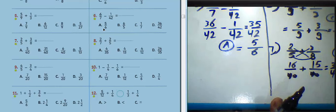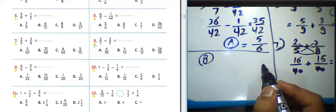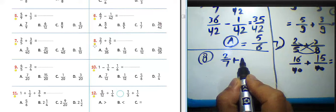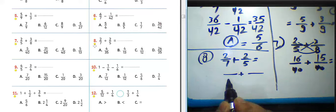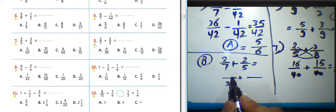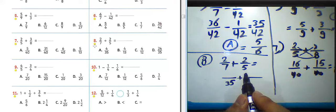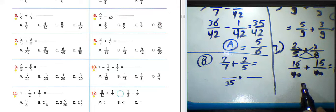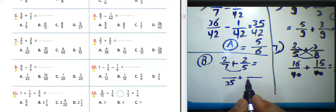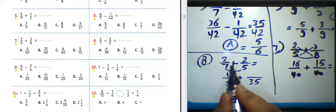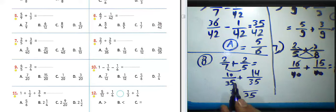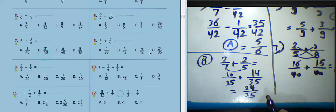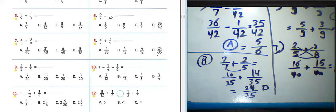Question number eight: 2 over 7 plus 2 over 5. We can find the least common multiple between them, which equals 35. Since 5 is a prime number — it has only two factors, 1 and itself — and 7 cannot be divided by 5, we find the product: 7 times 5 equals 35. Then 2 times 5 equals 10, and 2 times 7 equals 14. The result will be 35 in the denominator, and 10 plus 14 equals 24. The result is 24 over 35. Choose letter D about question number eight.